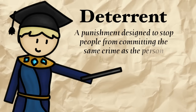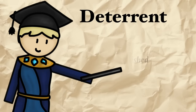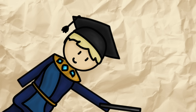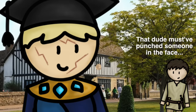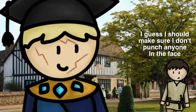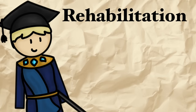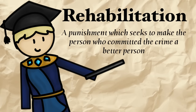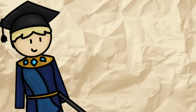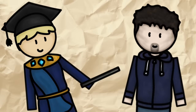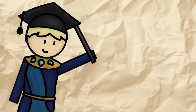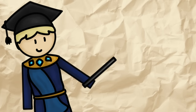A deterrent is a punishment designed to stop people from committing the same crime. So now you've been hit in the face with a chair because you punched someone — you have massive permanent scars on your face. When people see you in the street, they're reminded of what happened to you as a result of your crime, and in theory they think, I don't want that to happen to me, so I should make sure I don't punch anyone. A punishment classed as rehabilitation is one which seeks to make the person who committed the crime a better person. So rather than being hit in the face with a chair, you're made to do community service and talk to people who have been punched in the face, so you understand why it's bad. The hope is that once you've served your punishment, you won't go on to punch anyone again. That's rehabilitation.